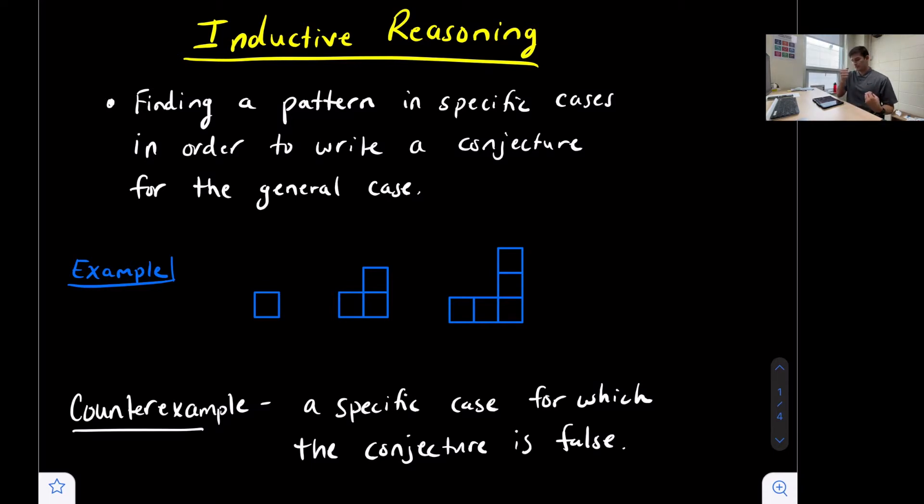They're adding one to the left, one to the top, then two to the left, and two to the top. So we can make our third, or excuse me, our fourth shape by adding three to the left.